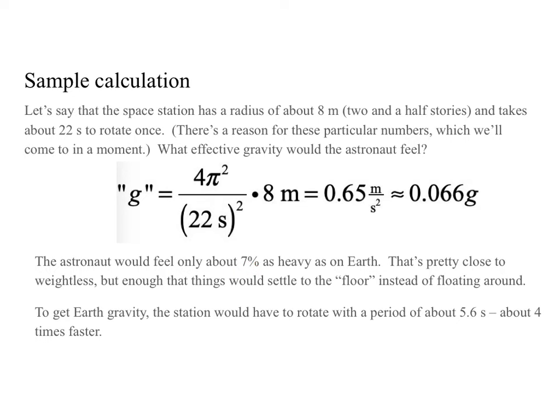The astronaut feels about only 7% as heavy as on Earth. That's pretty close to weightlessness, but not weightless. So things would still settle to the floor, and most likely your biological systems would be fooled into operating correctly. There would still be a pressure gradient from your head to your feet, even though it's a relatively weak one. We're not sure exactly how strong that field has to be to be equivalent to Earth gravity, but we could probably easily get to moon gravity.